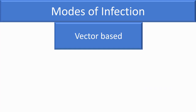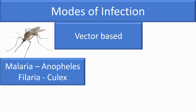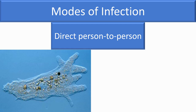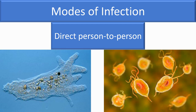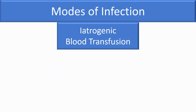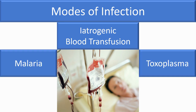Vector transmission: many parasitic diseases are transmitted by insect bite — for example, malaria by the bite of female Anopheles mosquito, filariasis by Culex mosquito, and Leishmania by sandfly. Direct transmission: parasitic infection may be transmitted by person-to-person contact, such as kissing in gingival amoebiasis and sexual intercourse in trichomoniasis. Vertical transmission: mother-to-fetus transmission may occur in malaria and toxoplasmosis. Iatrogenic transmission is seen in transfusion malaria and toxoplasmosis after organ transplantation.